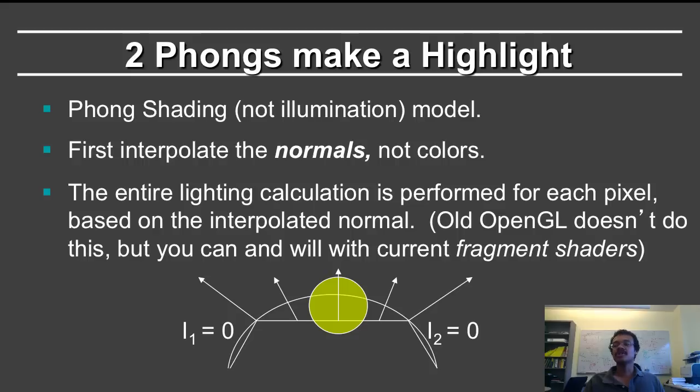The idea of Phong shading is simply that instead of interpolating the colors, what one actually does is interpolate the normals. So here we have the color was zero, but there's a correct normal at both of these locations. You interpolate the normal, and so you get the correct normal at the center, and therefore you can evaluate the illumination model and get a highlight.